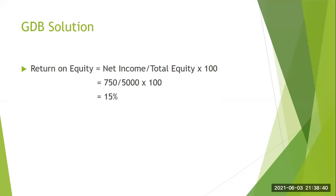Return on equity: we take net income divided by total equity, multiplied by 100. Net income is 750 million and total equity is 5,000 million. Since the unit is the same — both in millions — if we solve it, we get return on equity equal to 15 percent.